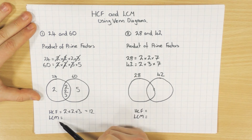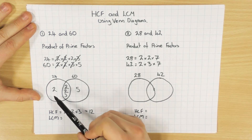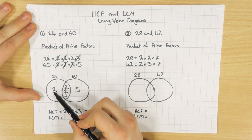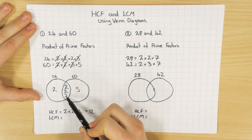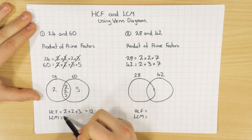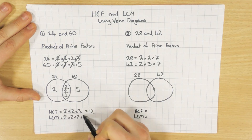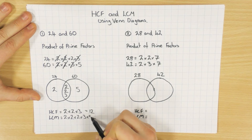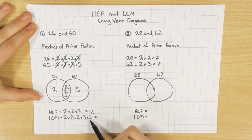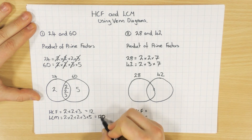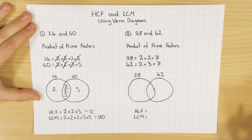Now to work out the lowest common multiple, which for big numbers is probably the hardest thing to do, but this method makes it nice and easy. You multiply all the numbers that are in your Venn diagram: 2 × 2 × 2 × 3 × 5. So 5 × 3 is 15, times 2 is 30, times 2 is 60, times 2 is 120. So the lowest common multiple is 120.